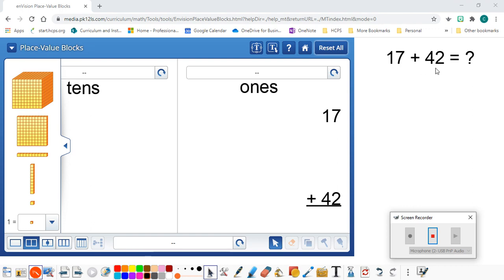Now, we're going to break these addends apart into tens and ones, so we're going to want to make sure that we're using our two-part workspace. That's the second icon from the bottom.